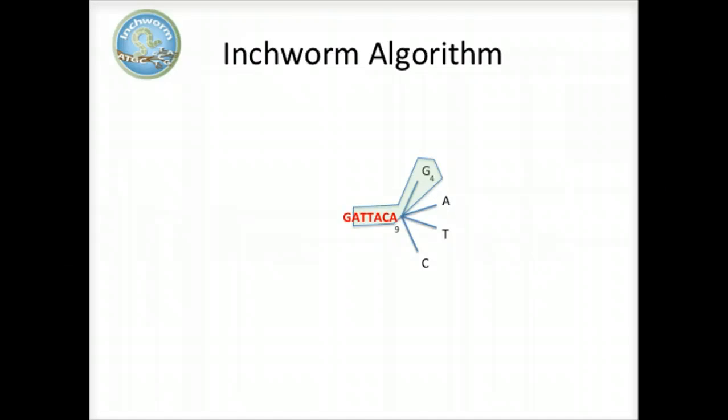In this toy example, the k-mer ending with G is found four times. A is found once. The k-mer ending with T doesn't actually exist in the reads, so it's given a count of zero. And the k-mer ending with C is found four times.